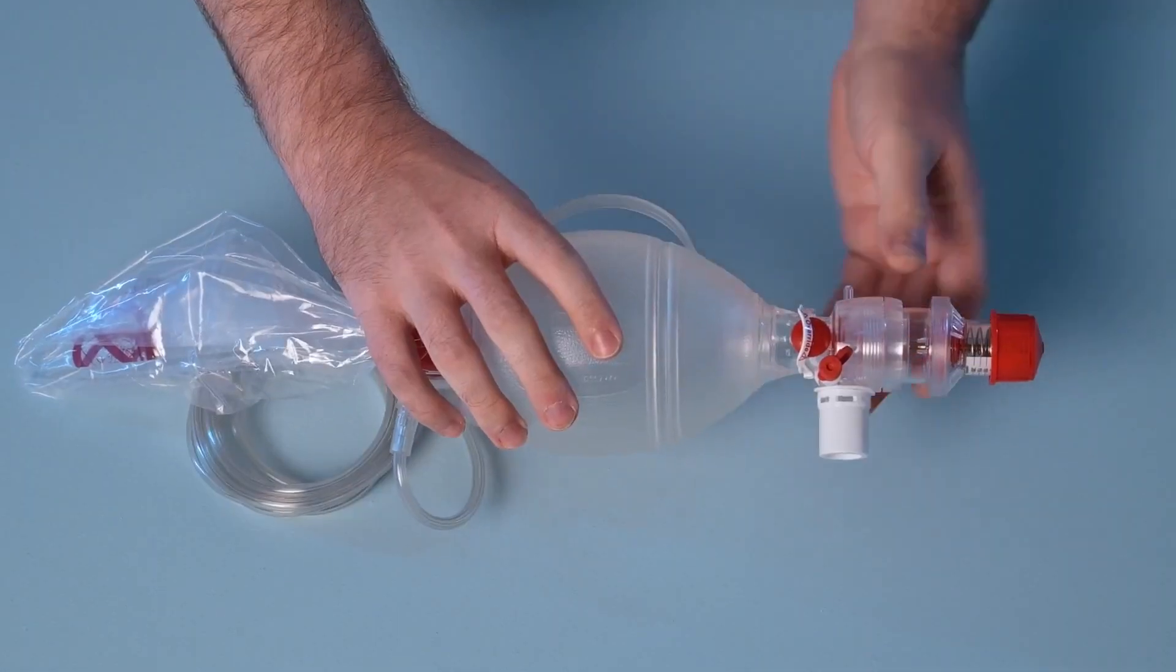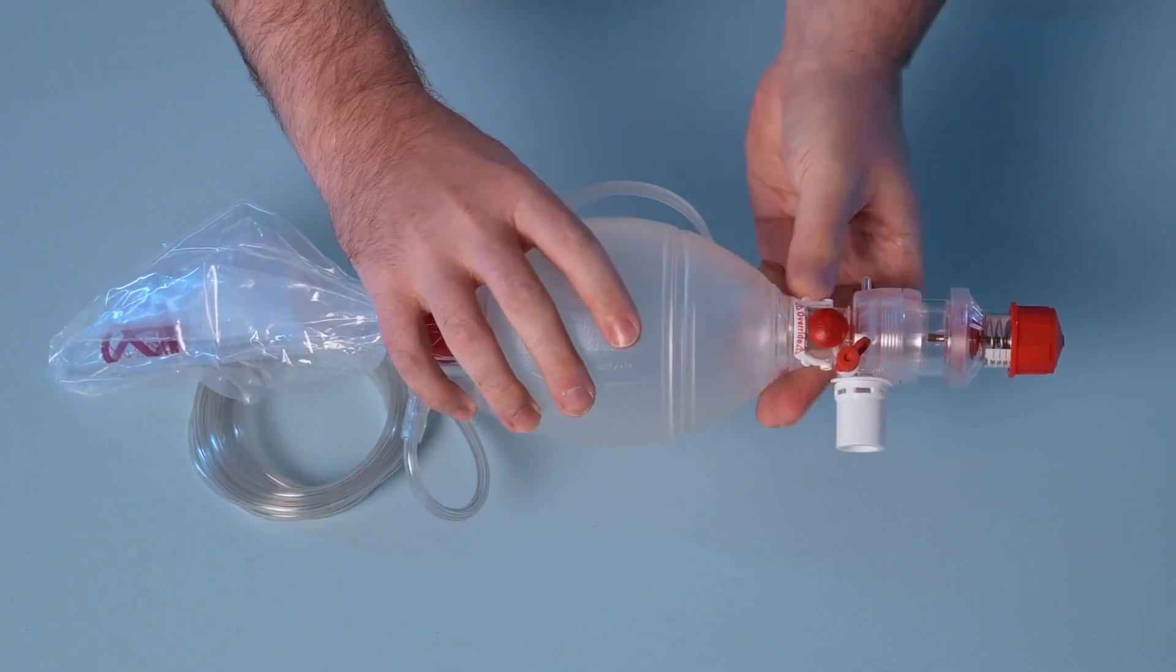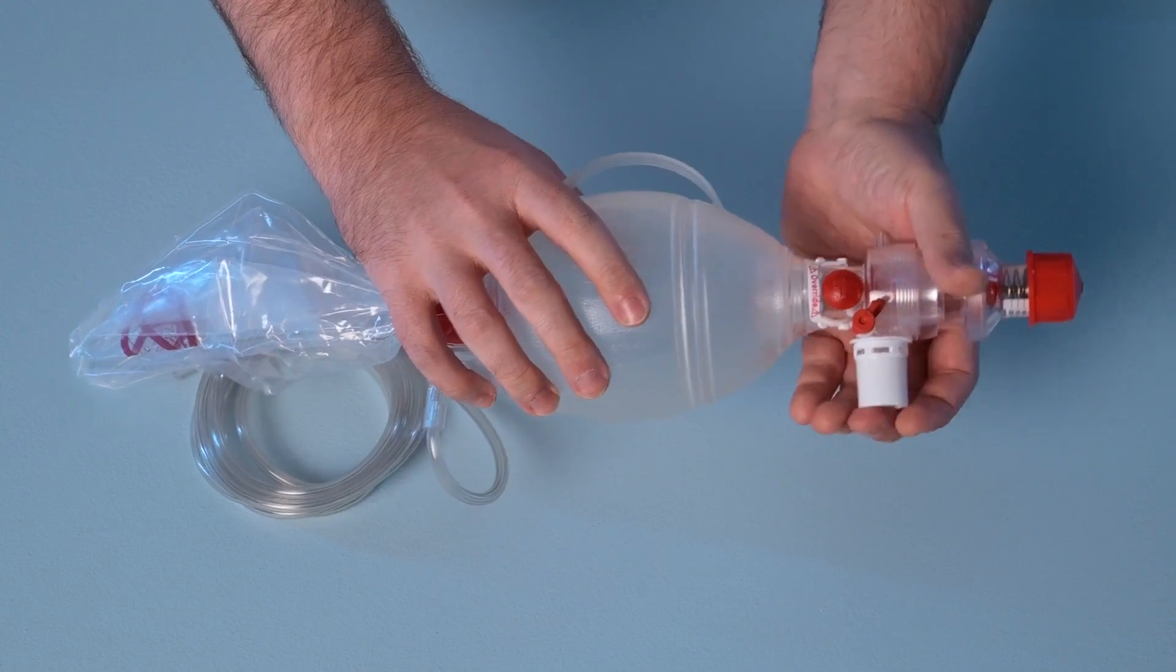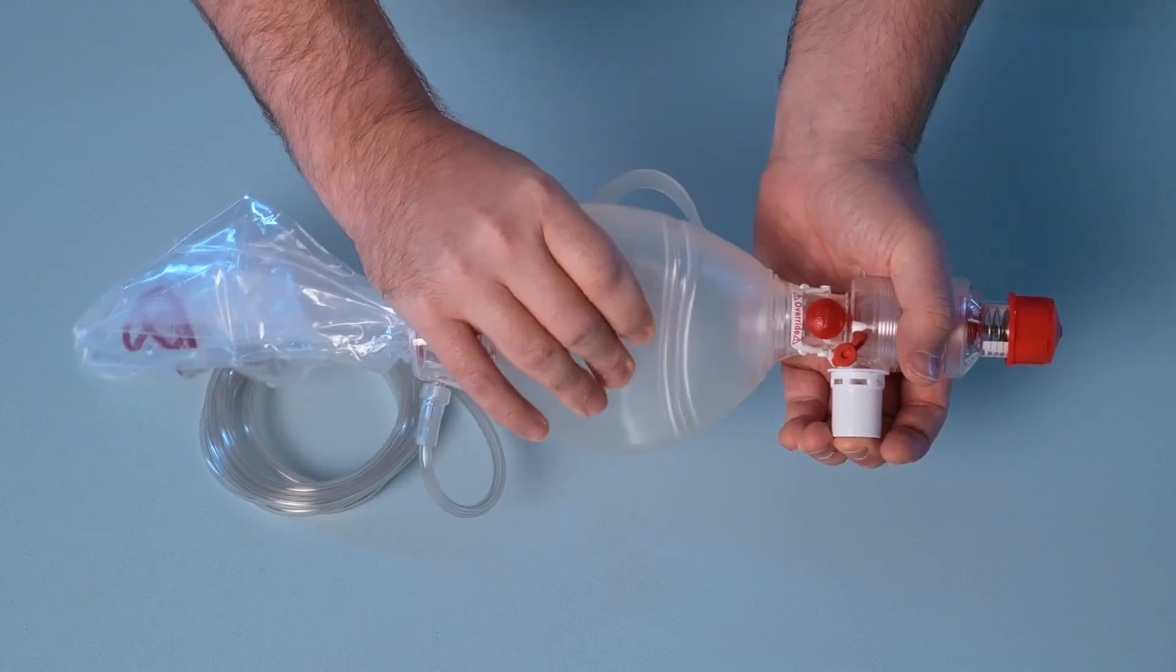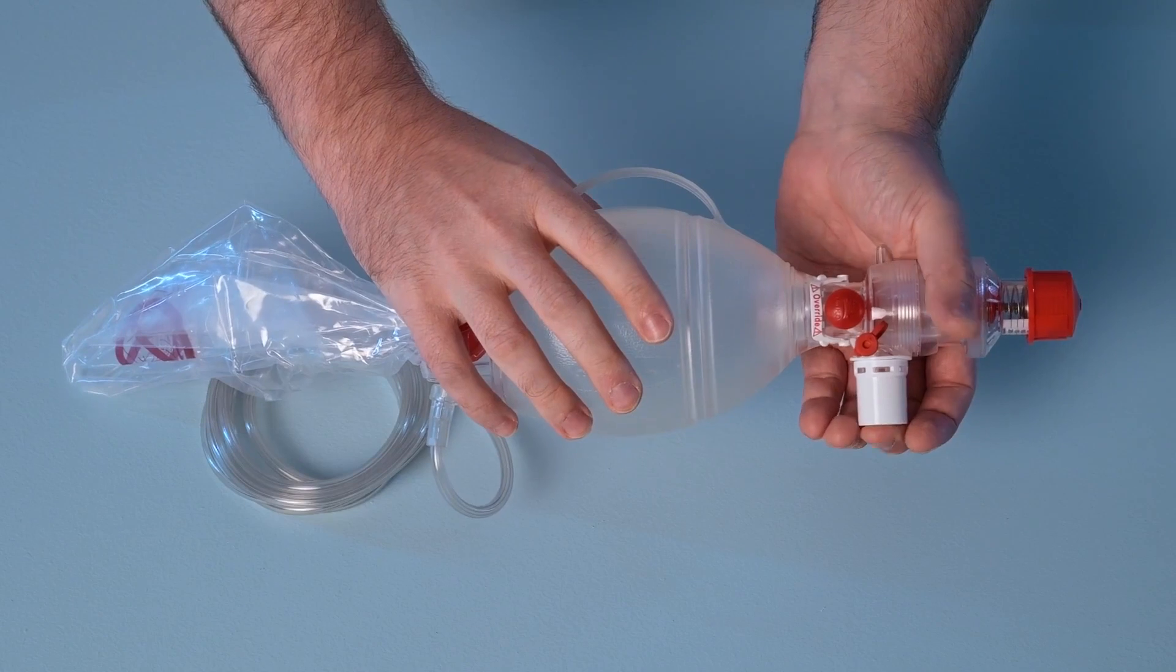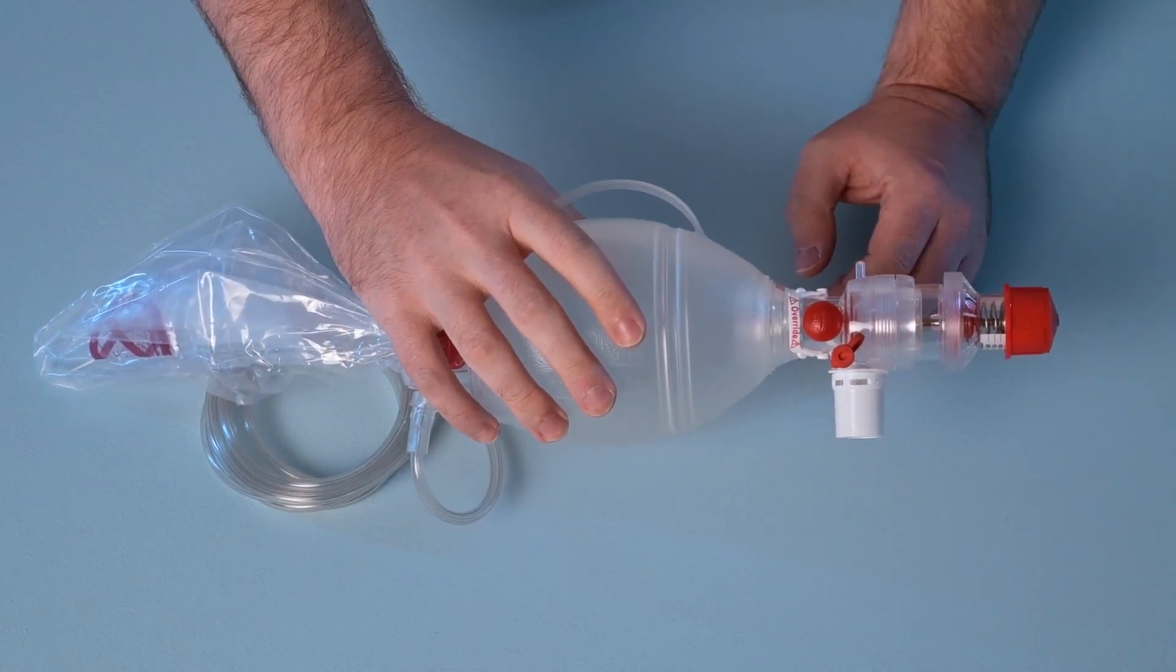Next, disengage the override clip and repeat the process. This time, the valve should activate, allowing for the air within the resuscitator to escape.